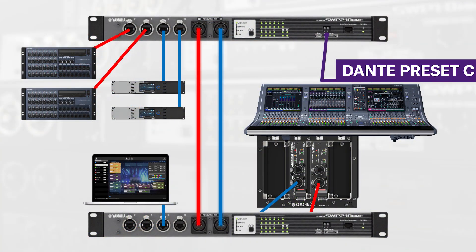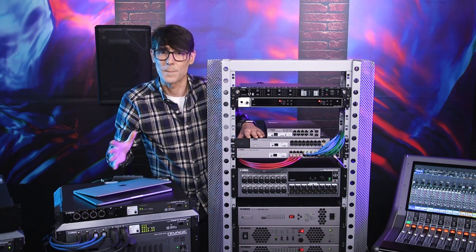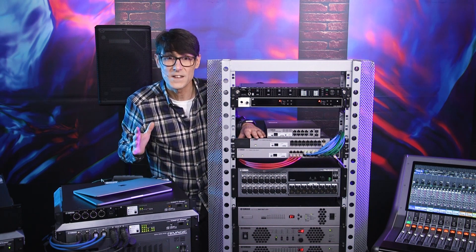Dante preset C makes both VLANs ready for Dante, so two separate Dante networks can be used within the same switches — perhaps one for bringing inputs from the performance area to the mixing console, and a separate network to distribute the mixer outputs to the PA system amplifiers.